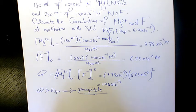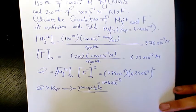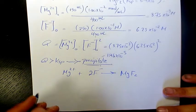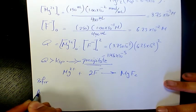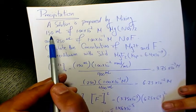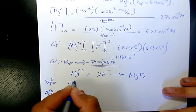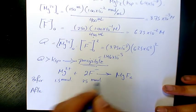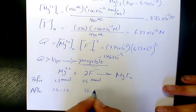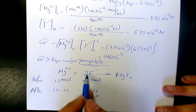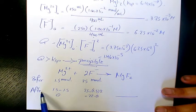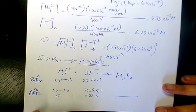When we mix them together, if we run the precipitation reaction to completion: Mg²⁺ + 2F⁻ → MgF₂. Before reaction: Mg²⁺ has 150 mL × 1.1×10⁻² M = 1.5 millimoles, and F⁻ has 250 mL × 1×10⁻¹ M = 25 millimoles. After the reaction: Mg²⁺ goes to 0 (limiting reagent), F⁻ goes to 25 minus 2×1.5 = 22 millimoles.